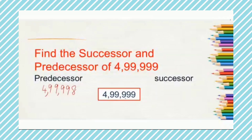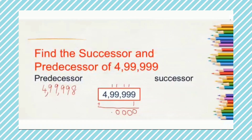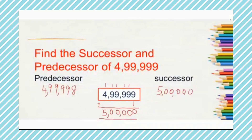The successor means we need to add 1. When you add 1 to 4,99,999: 9 plus 1 is 10, write 0 carry 1; 9 plus 1 is 10, write 0 carry 1; 9 plus 1 is 10, write 0 carry 1; 9 plus 1 is 10, write 0 carry 1; 9 plus 1 is 10, write 0 carry 1; 4 plus 1 is 5. After 3 digits, put a comma; after 2 more digits, put another comma. So we get 5,00,000, that is 5 lakhs, as the successor of 4,99,999.